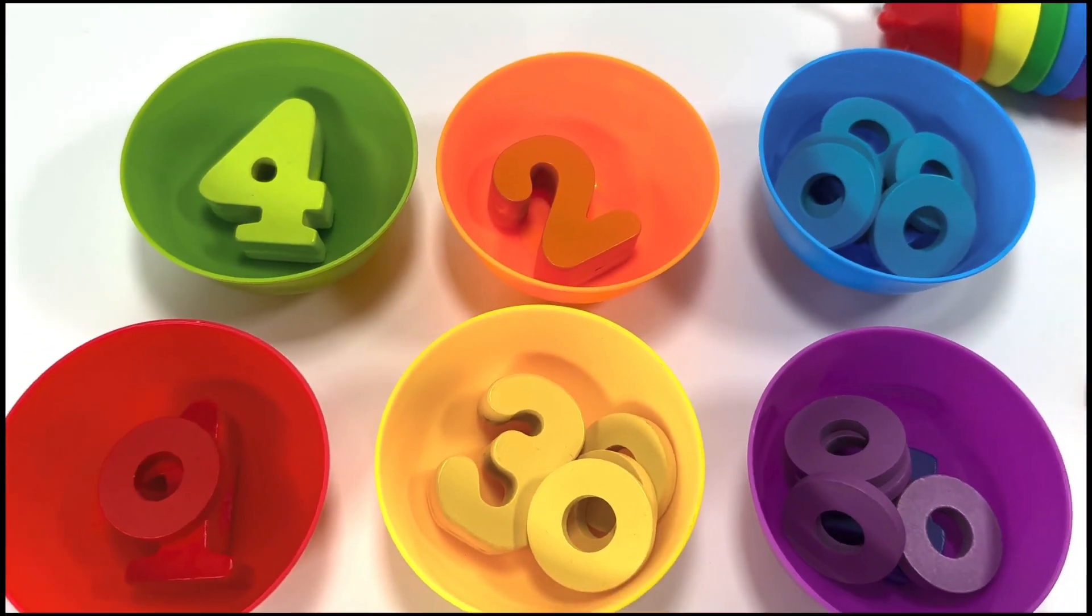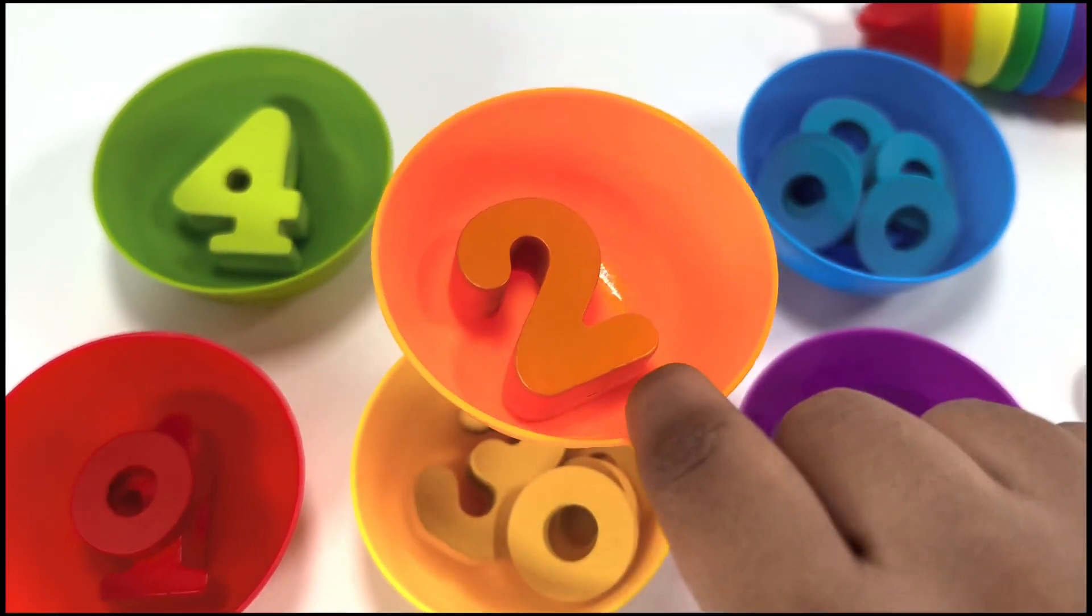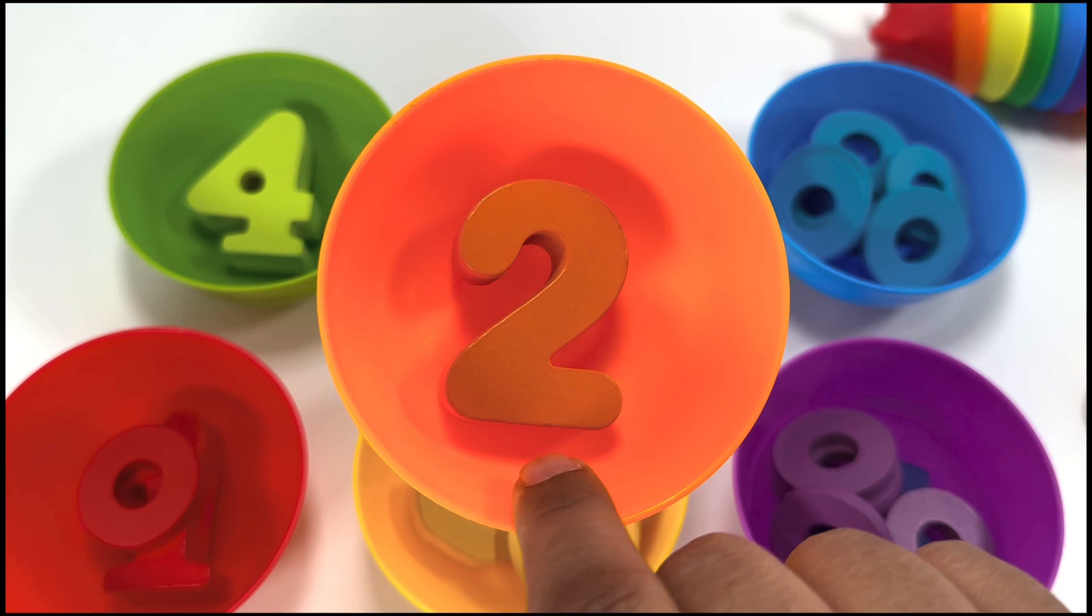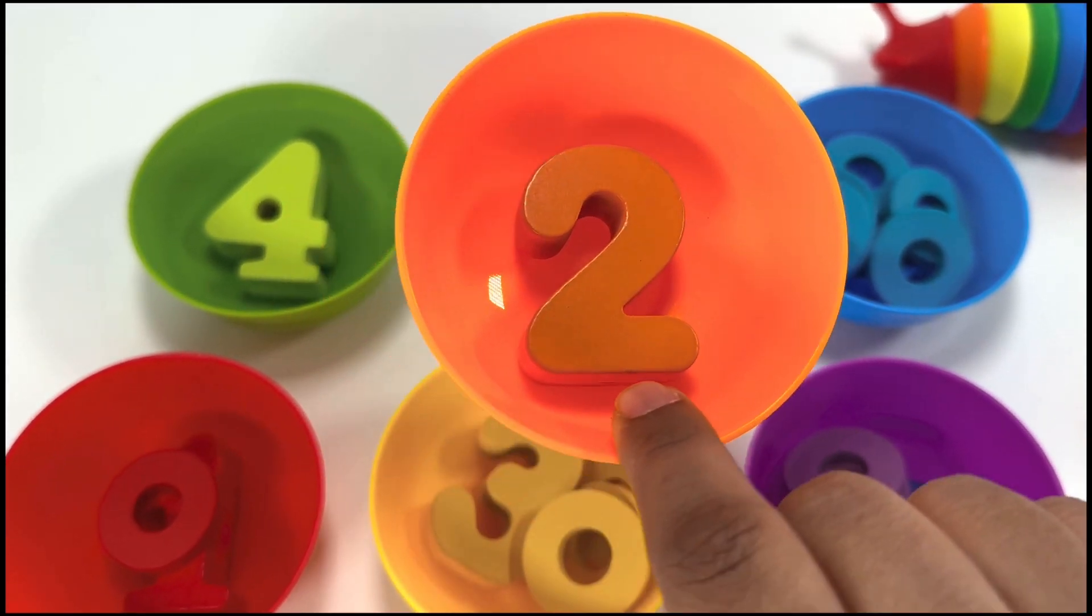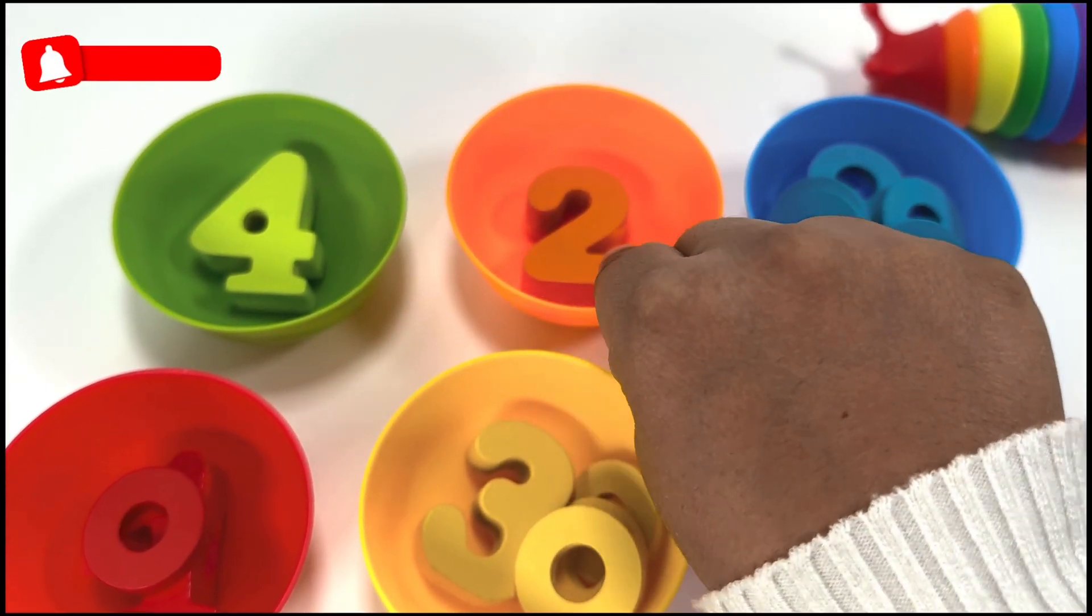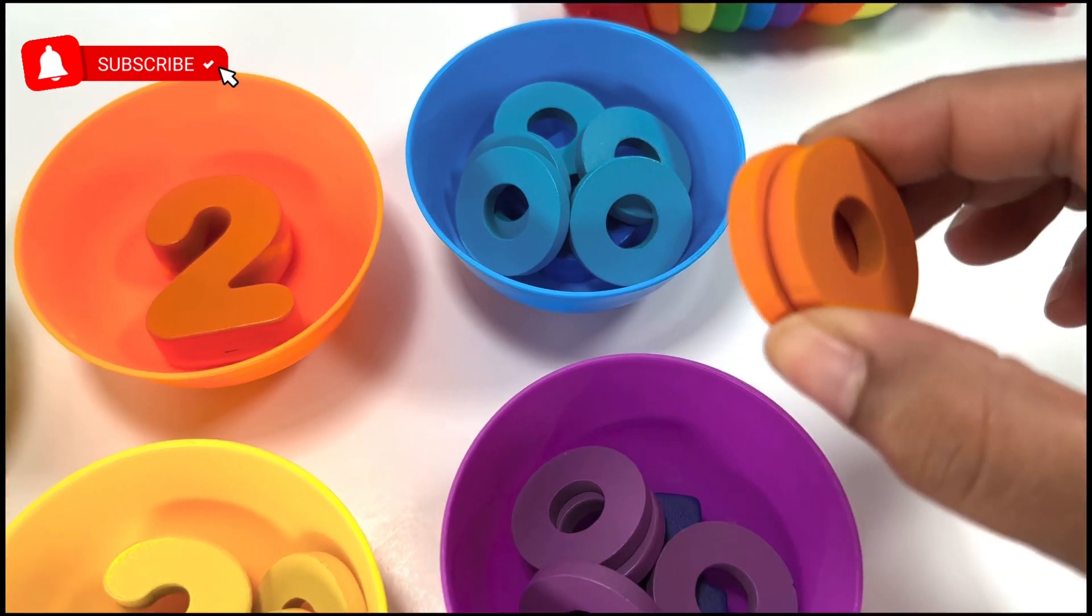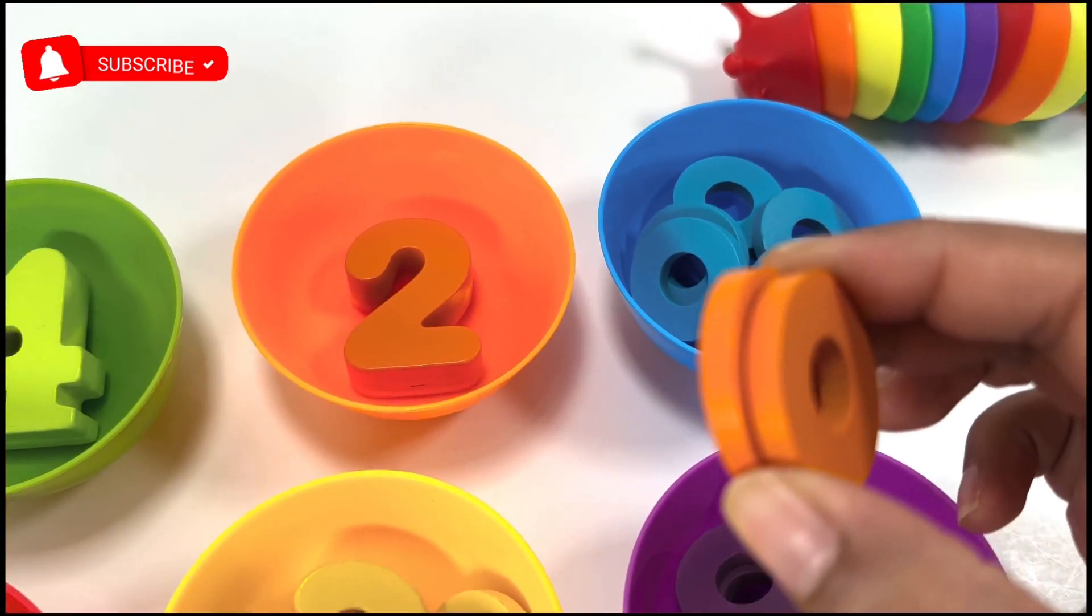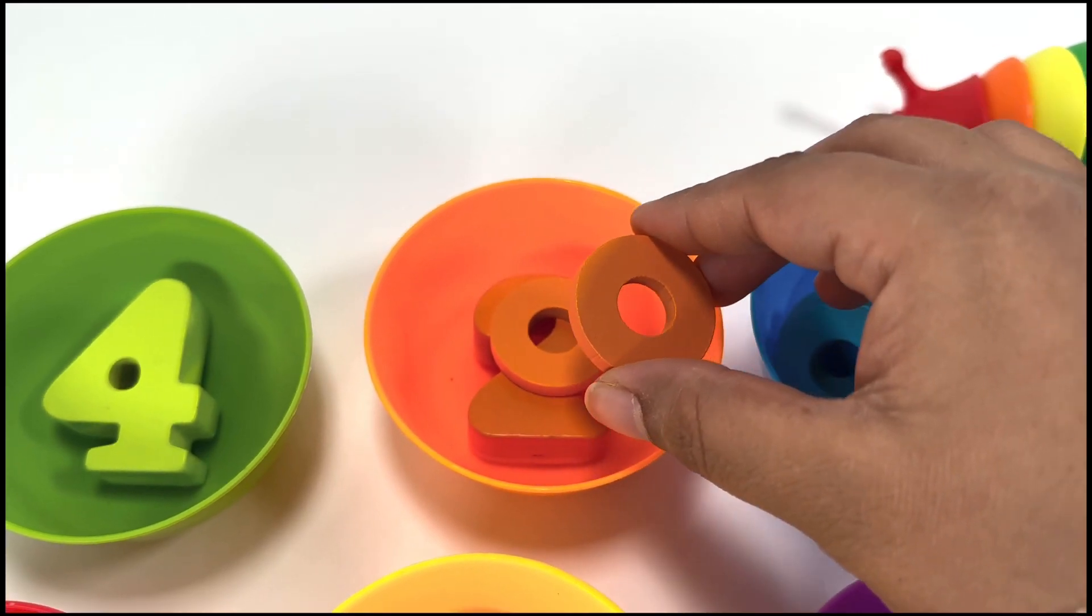We are left with two bowls now. What color is this? Orange. And the number is two. That's right. Great. Let's put two rings in the orange bowl. We also only have two rings. Two orange rings. One, two.